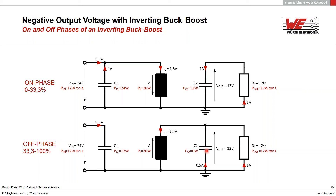During the off phase, the constant input current of 0.5A charges the input capacitor. During the on phase, there was a current of 1A charging the inductor for one third of the time — 24W in total. During the off phase it is charged with 12W for two thirds of the time — also 24W in total. So we see all capacitors are charged and discharged with the same amount of energy.